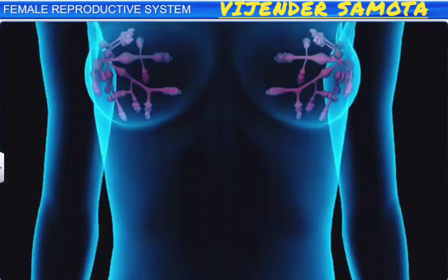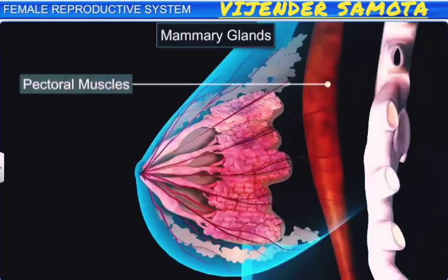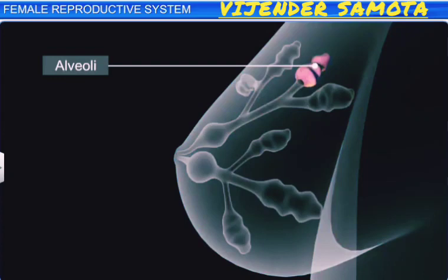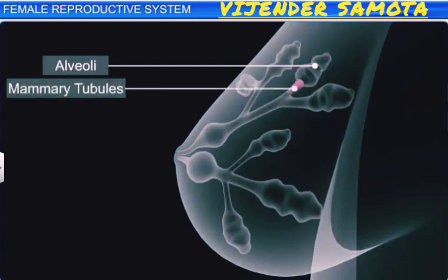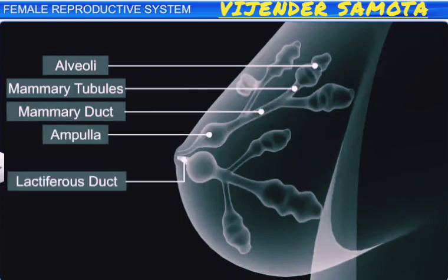The female reproductive system is supported by the mammary glands. The mammary glands, or breasts, are modified sweat glands that lie over the pectoral muscles. They contain glandular tissues and a variable amount of fat. Internally, each breast is divided into fifteen to twenty mammary lobes containing clusters of cells called the alveoli. The alveoli open into the mammary tubules. The tubules of each lobe join to form the mammary duct. Several ducts join to form a wider ampulla, which is connected to the lactiferous duct. The lactiferous duct opens out through the nipple, from which milk is sucked out.